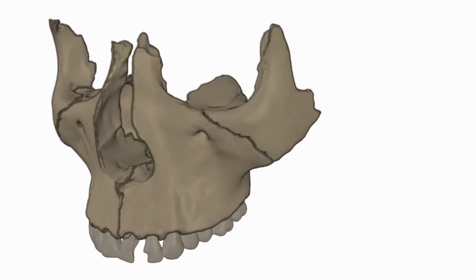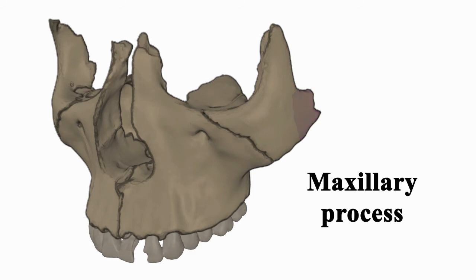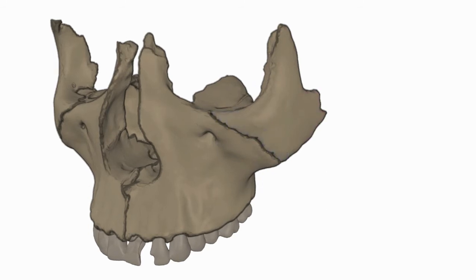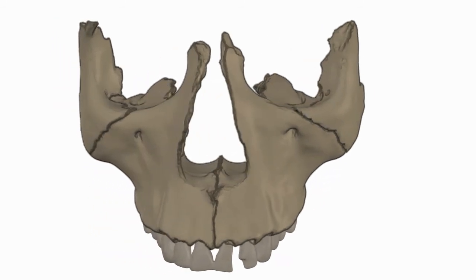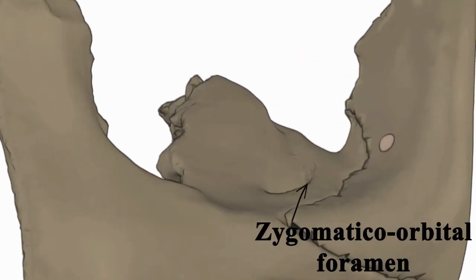The zygomatic bone consists of frontal process, temporal process, and maxillary process. Its orbital surface contains the zygomatico-orbital foramen.